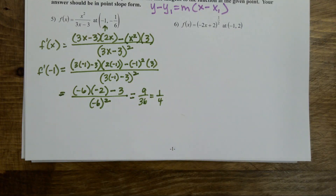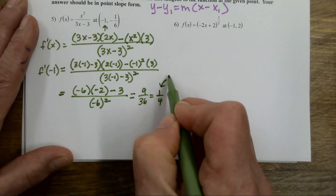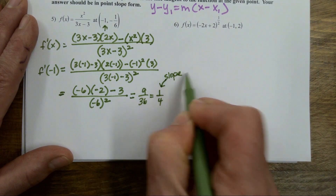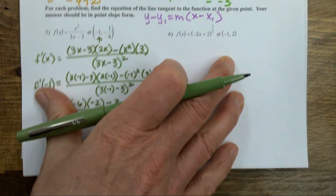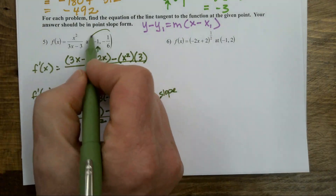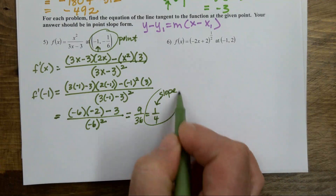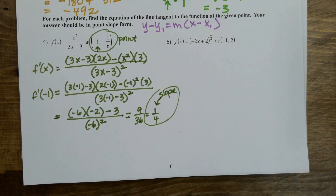Or if you plugged it in, maybe you got 0.25. That kind of stuff doesn't matter too much. This is my slope. If I want to use point-slope form, I need a point — check, there's my point — and a slope — check, there's my slope. And then all I have to do is plug it in.